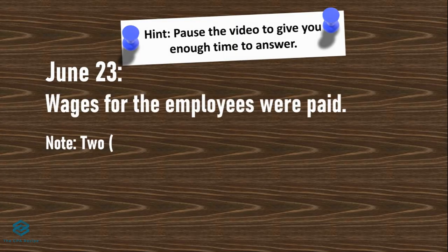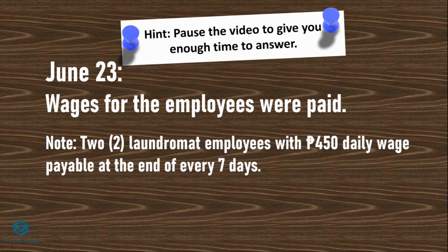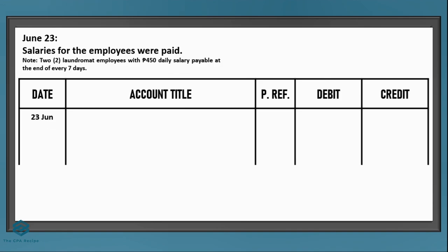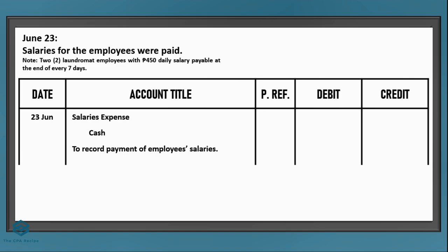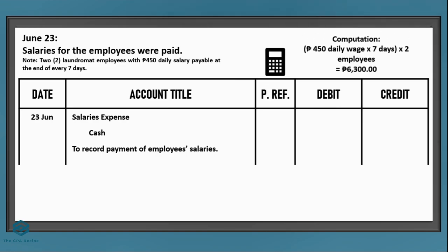Also on June 23, wages for the employees were paid. Operations started June 17, so this is the first payroll. Let's put the date June 23. Since the employees have been working for us, it's already salaries expense — the service has been provided. Debit salaries expense and credit cash since we're paying them. The explanation: to record payment of employee salaries. The amount is 450 pesos per day for 7 days times 2 employees, for a total of 6,300 pesos.